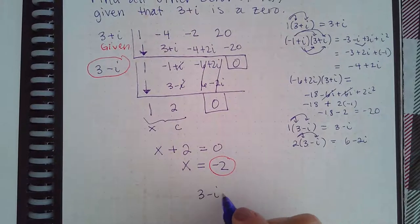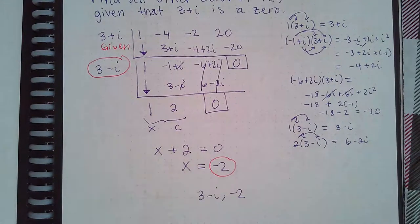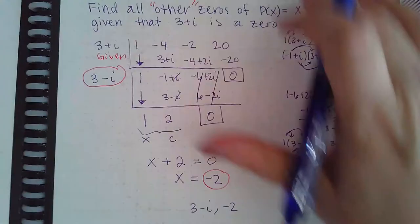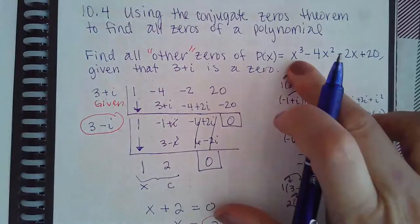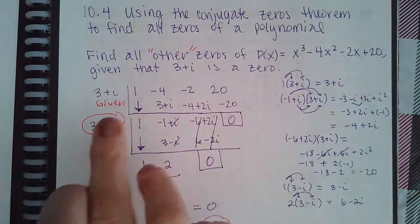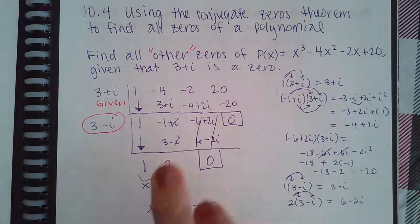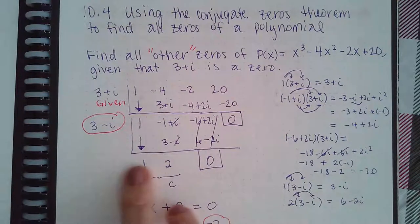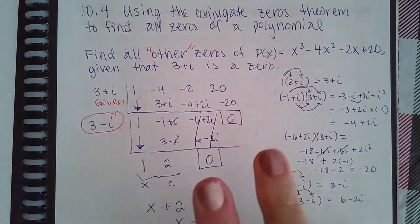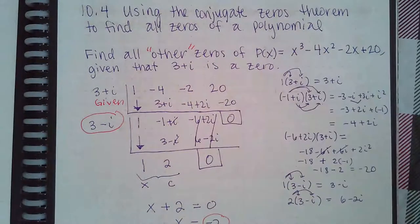Just keep in mind that if you had a fourth power, you might have to do the work with the zero that was given, do the work with the conjugate, but when you're done here you'll end up with a quadratic. Then you have to do the quadratic formula to find the last two zeros. That's only if it were a fourth power.